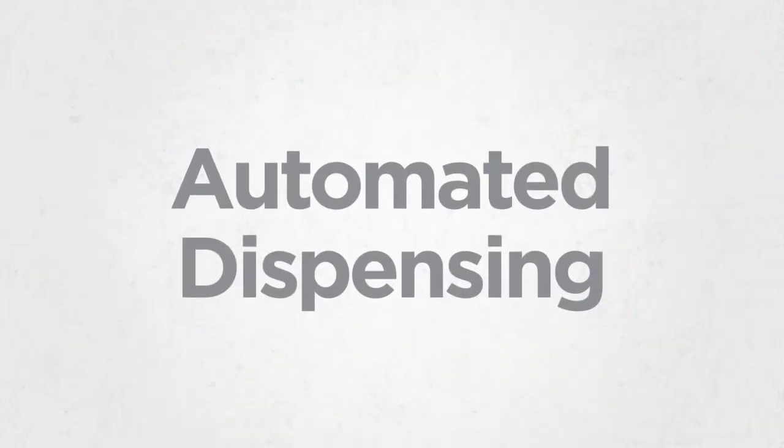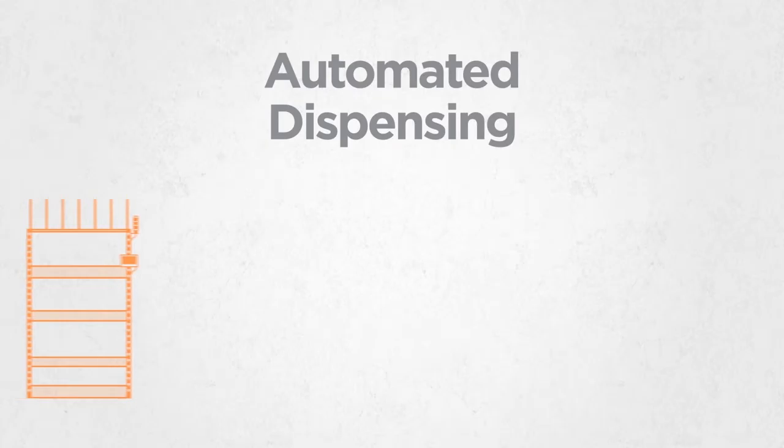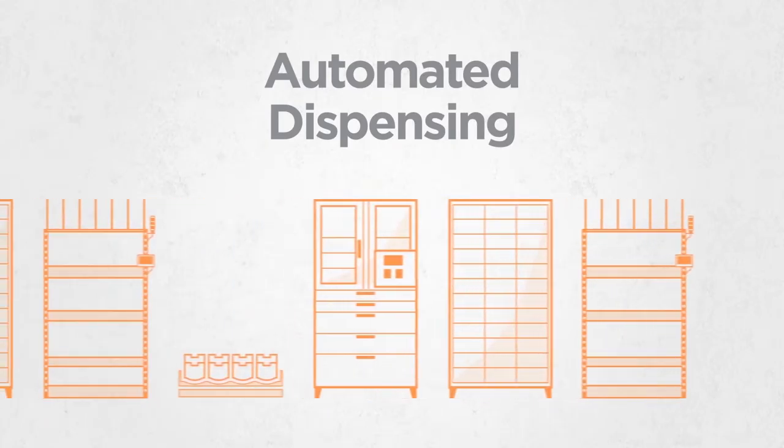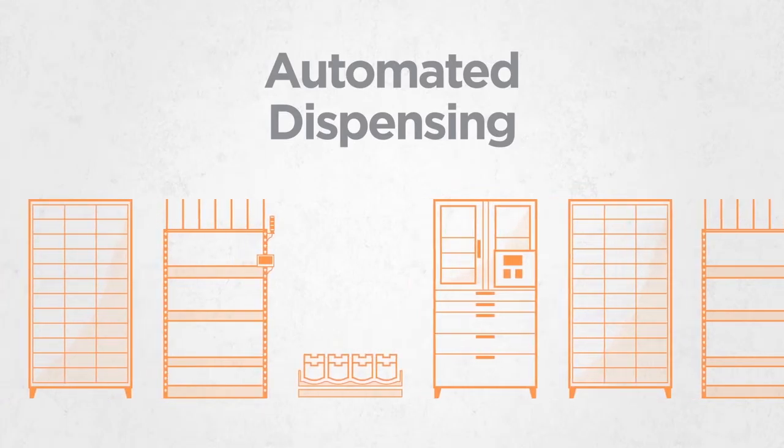Automated dispensing, right at the point of use. Some of these devices look like vending machines, lockers or supply cabinets. Some look like simple open shelves or open bins.